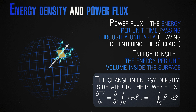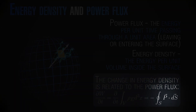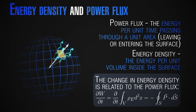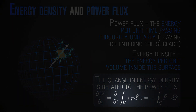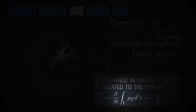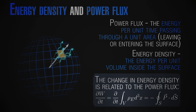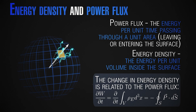The connection between the two — since the only way for energy to enter or exit the sphere is through its surface — is given by an integral formula. The integral of the Poynting vector over the whole surface gives us the total power flux for the whole area, i.e., the total energy per unit time passing through the surface. All the energy passing per unit time must equal, up to a sign convention, the total change in the energy inside. So the time derivative of the volume integral of the energy density equals the surface integral of the Poynting vector.